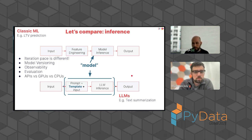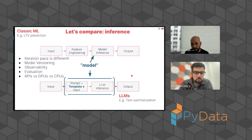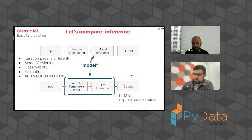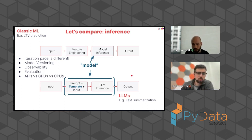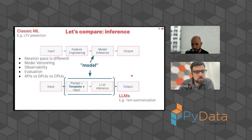In terms of deployment or serving infrastructure, there's nothing really new here. People were already dealing with APIs for inference. The only real difference is that if you're doing LLM stuff or hosting internally, you're going to need GPUs. Whereas in the classic world you could get away with just CPUs, though people have already been using GPUs for serving with deep learning for a while.